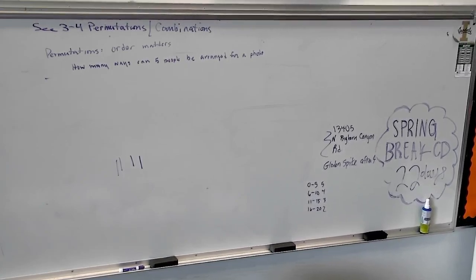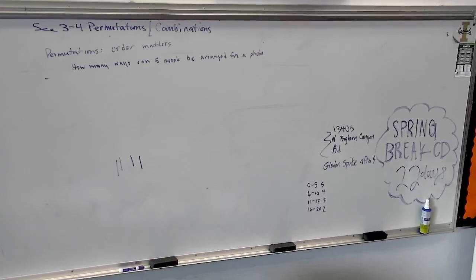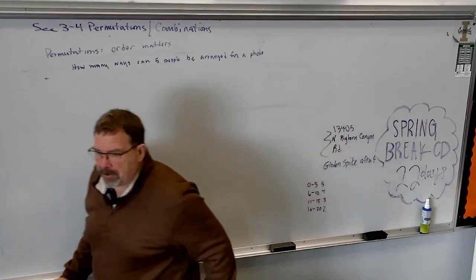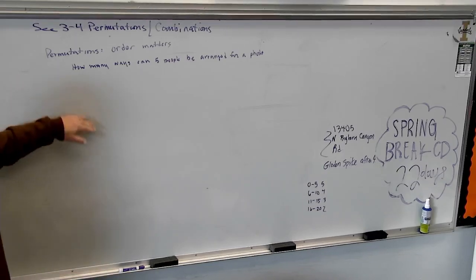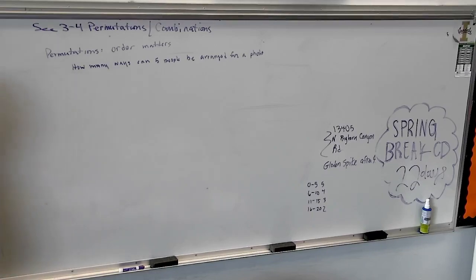First thing we're going to talk about is a permutation. Whenever you hear the word permutation, order matters. We're putting things in order. Let's do that example right there. How many ways can five people be arranged for a photo? Do you agree that I'm putting them in some type of order?